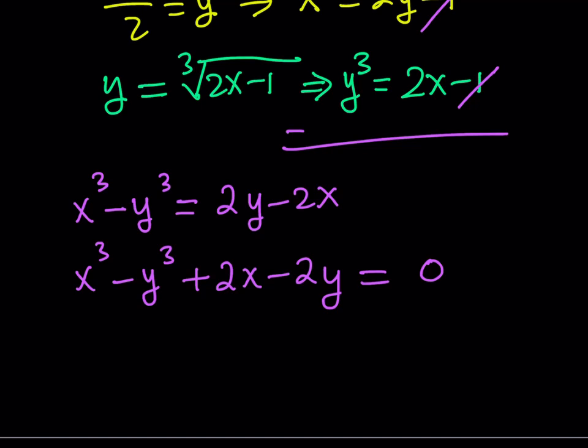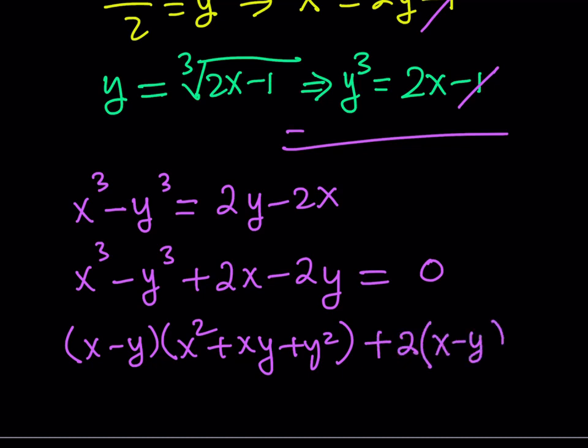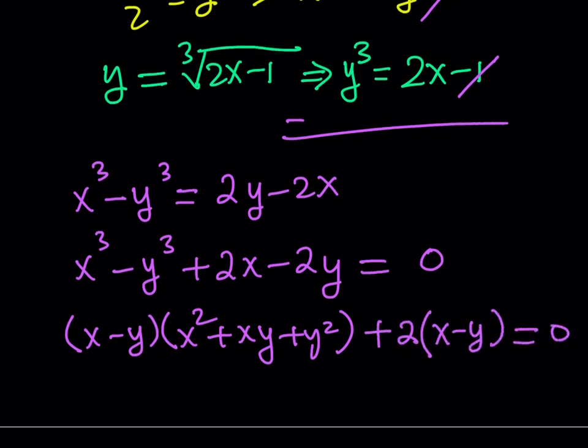x cubed minus y cubed is going to make a group because it's difference of two cubes. We can factor it as x minus y multiplied by x squared plus xy plus y squared. What about the second part? Well, naturally, what's left over is going to be the second group, which is 2x minus 2y. 2 is a common factor. Take out a 2, and you should get 2 times the quantity x minus y, and the whole thing equals 0.